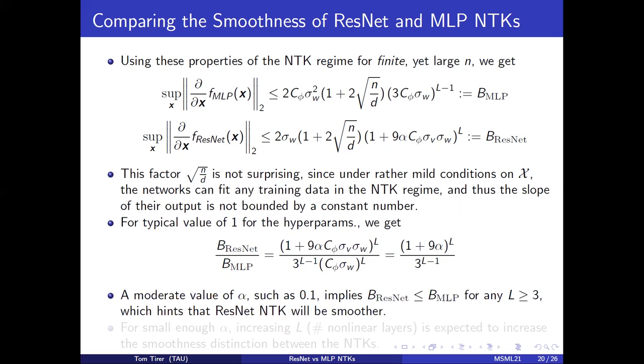First, for a moderate value of alpha, which weighs the residual block, we get that the bound for ResNet is smaller, which means that its output is smoother than MLP.